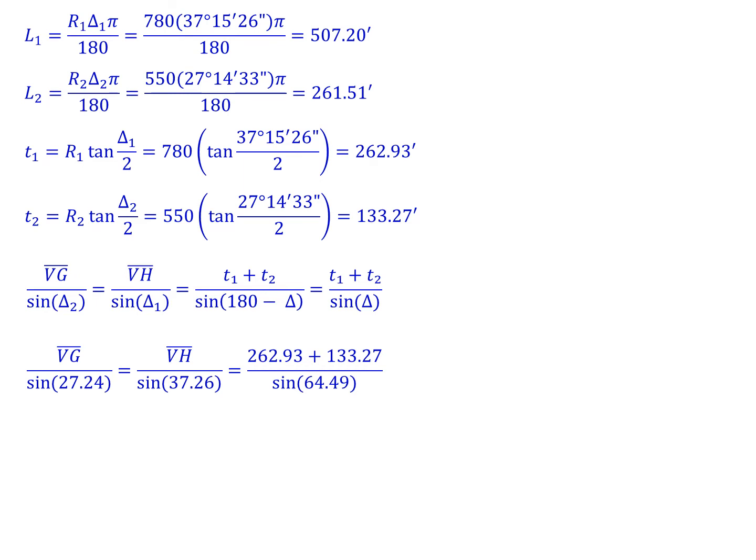We can start plugging in the values that we know. We're going to want to solve for VG and VH—the distances between those points. V is at the PI, and then G and H are listed on the drawing.